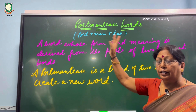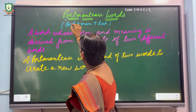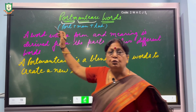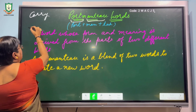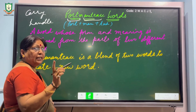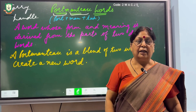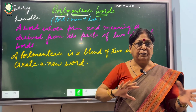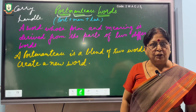Now we understand the meaning of portmanteau words, but what exactly does the word 'portmanteau' itself mean? This word is a blend of two different words: 'port' and 'mantle.' Port means to carry, and mantle means to handle. Basically, it was used for a large suitcase or traveling bag which had two different equal parts — one part was used to keep clothes and the other for accessories needed while traveling. Portmanteau words are similar: two different parts of two different words make a new word.